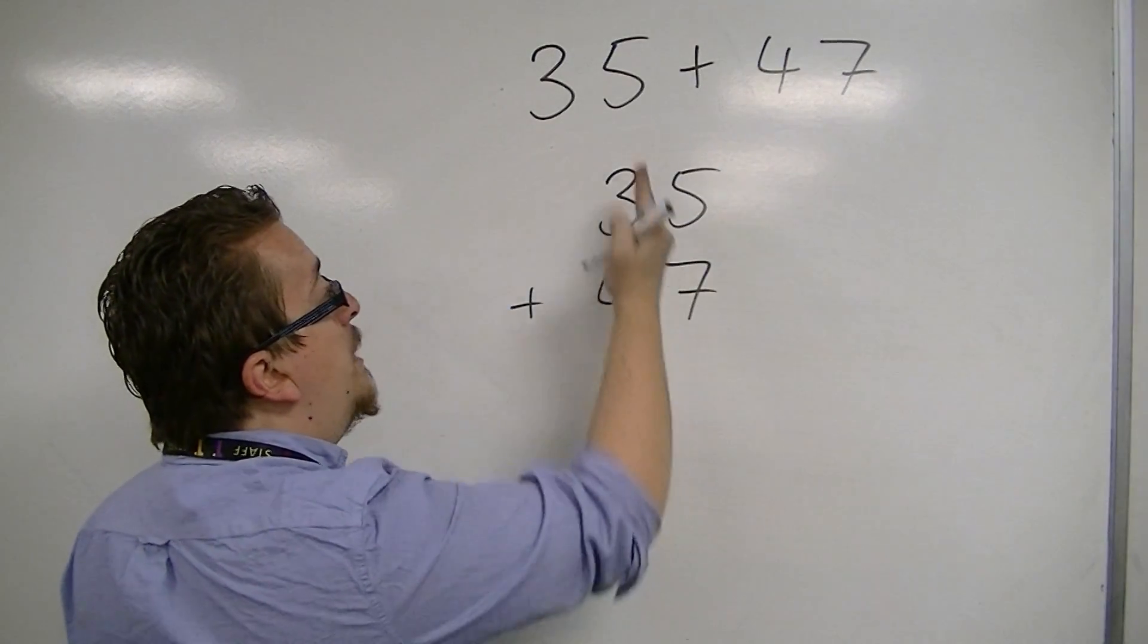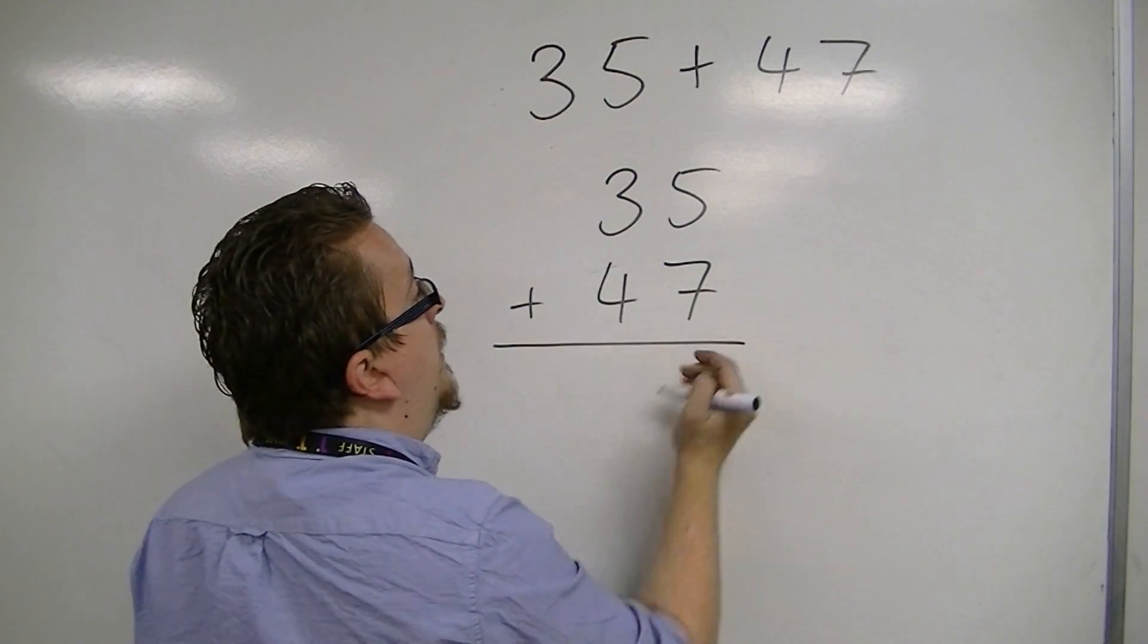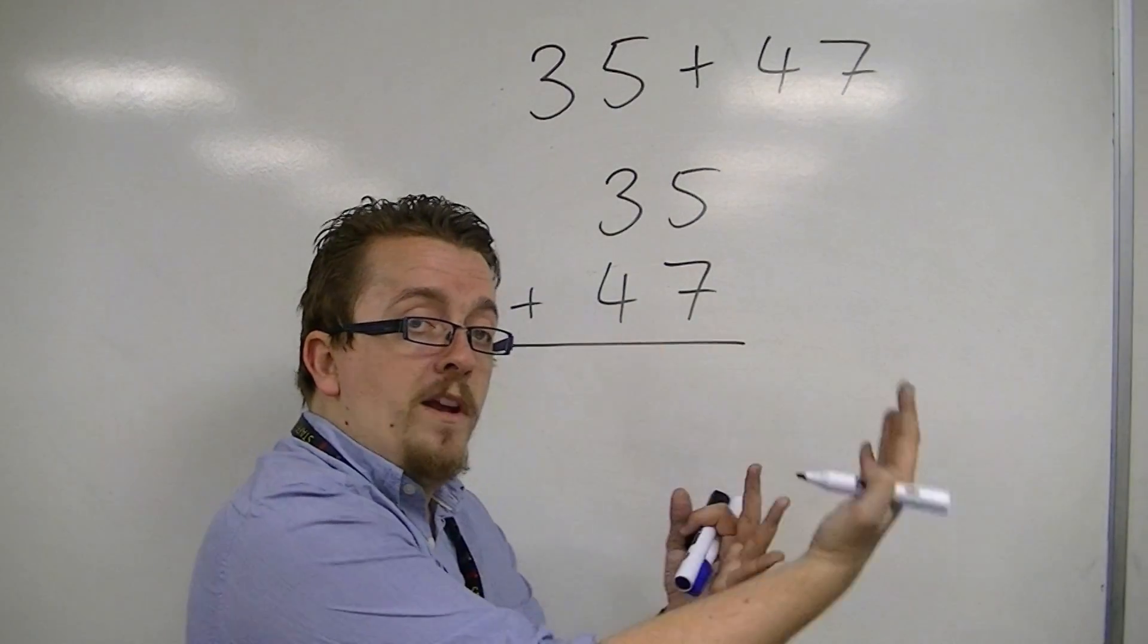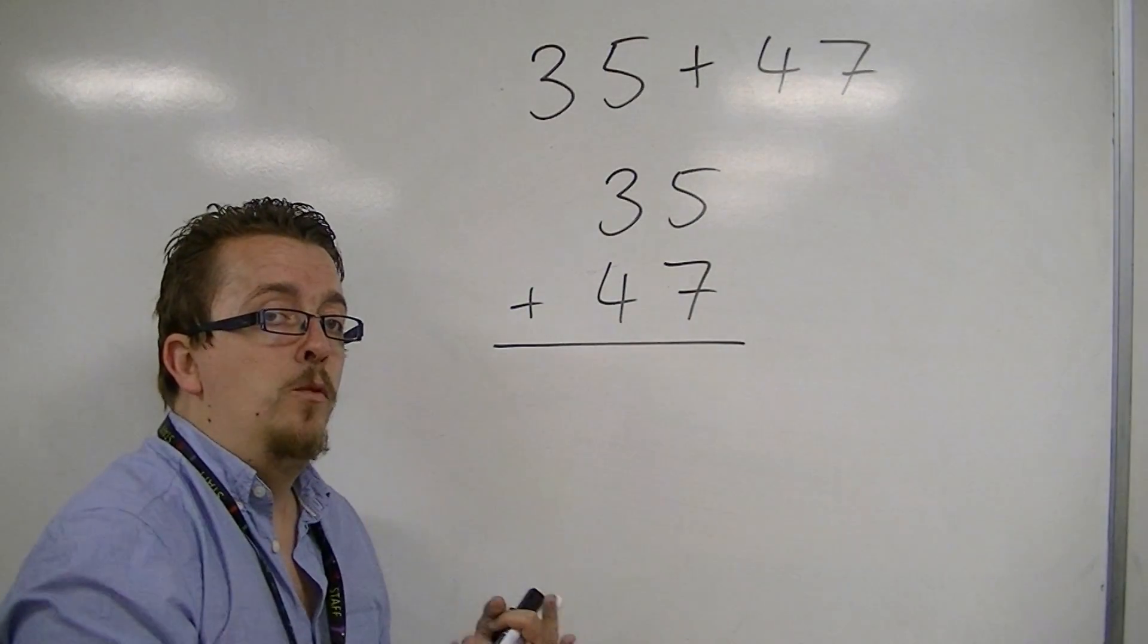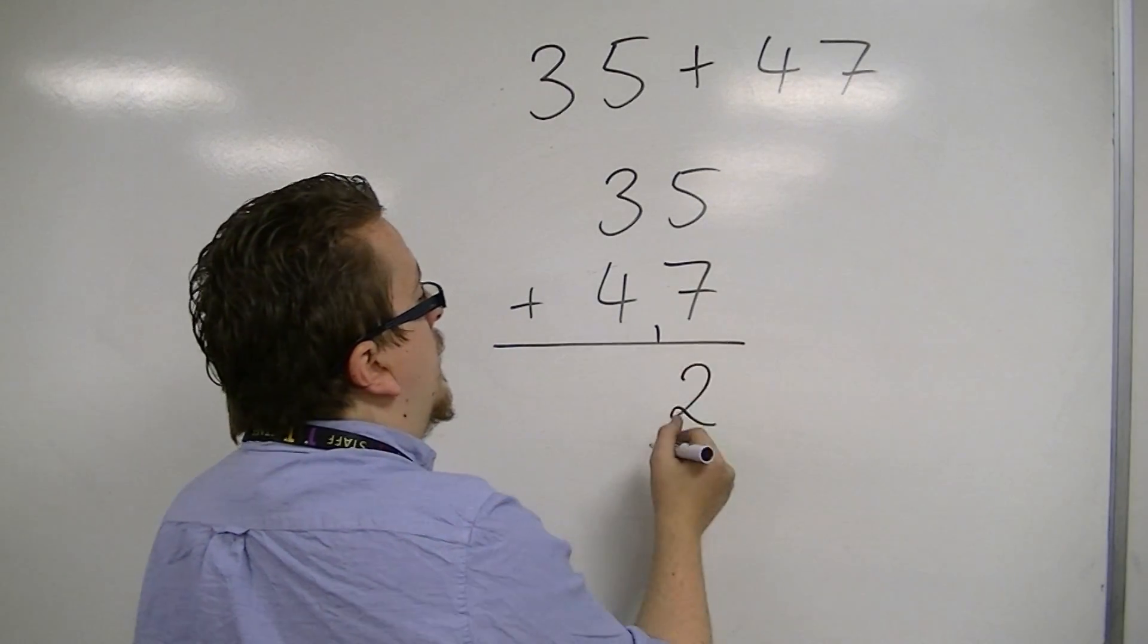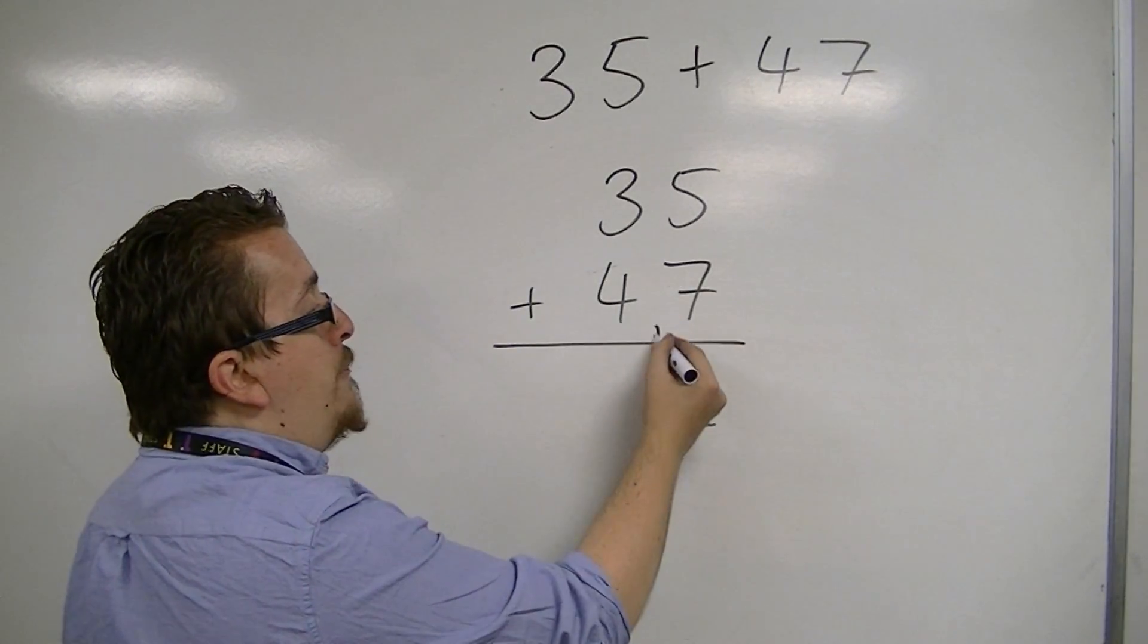So you've got the units lined up, you've got the tens lined up, so that then you can think about doing 5 plus 7. You're always working from the right-hand side to the left with addition. 5 plus 7 is 12. So we put the 2 and carry the 1 over.